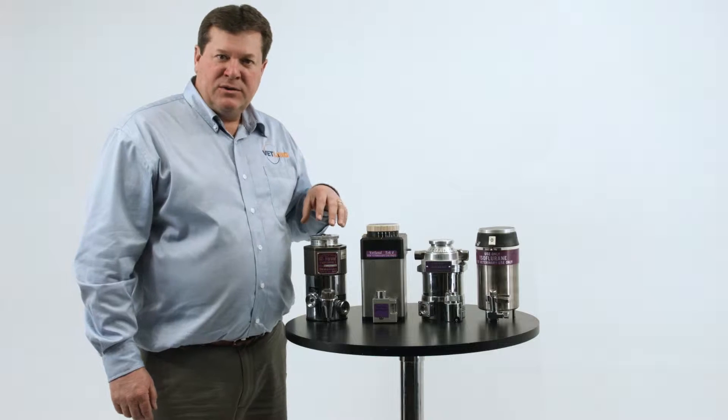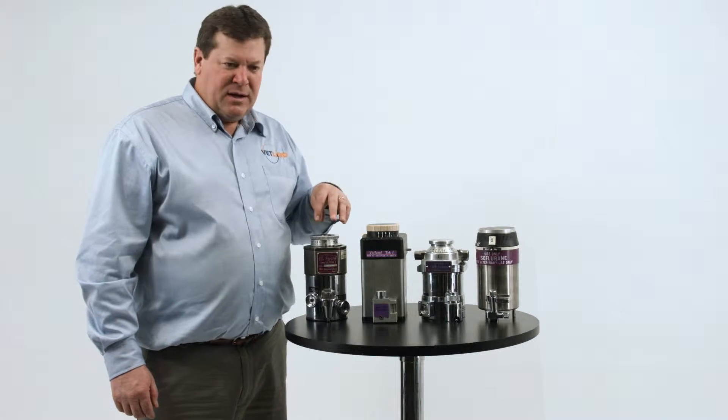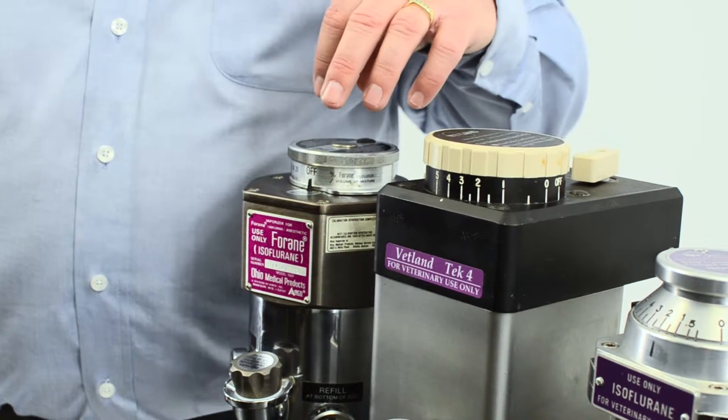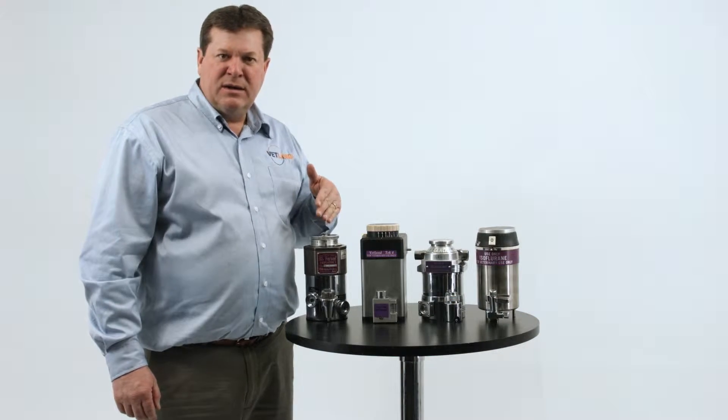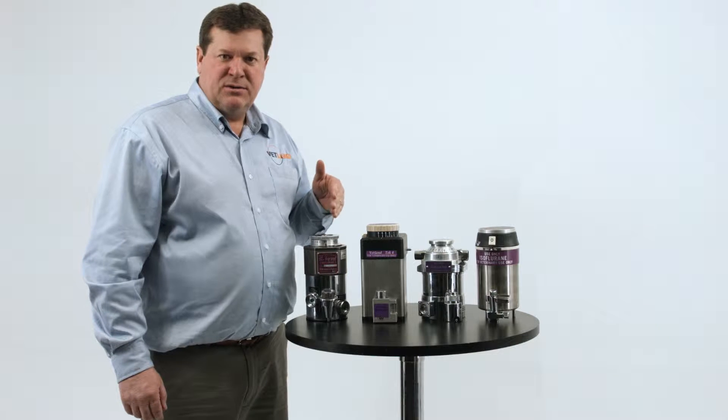The Ohio vaporizer is one of the older designs. It uses a bellows thermostat and paper wick material. It is required to be sent back in every three years and have it adjusted and recalibrated.